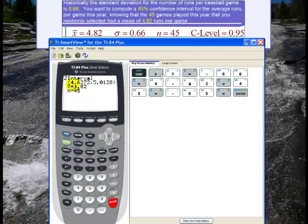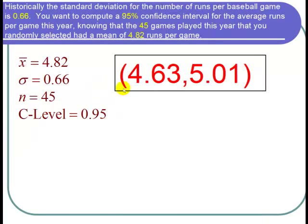I'm going to round to two decimal places: 4.63 to 5.01. And let's go back to our PowerPoint. So the calculator gave us a confidence interval from 4.63 to 5.01.